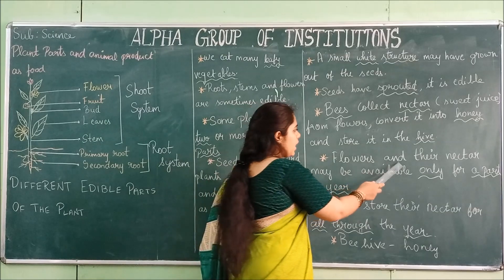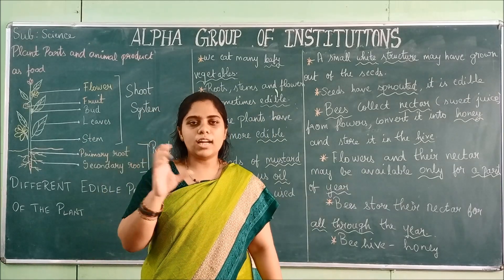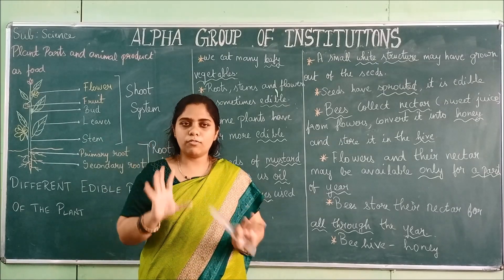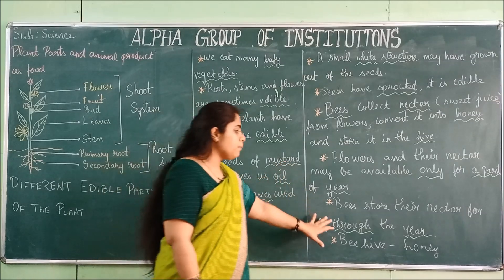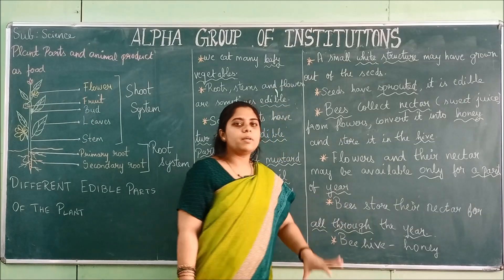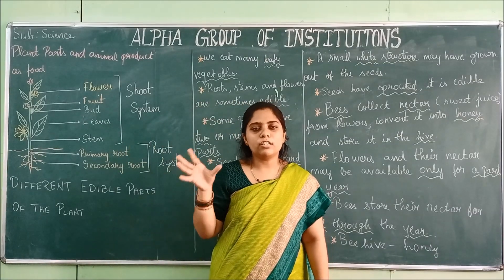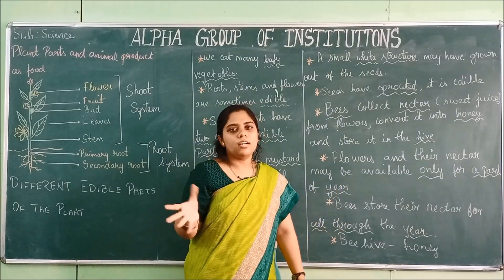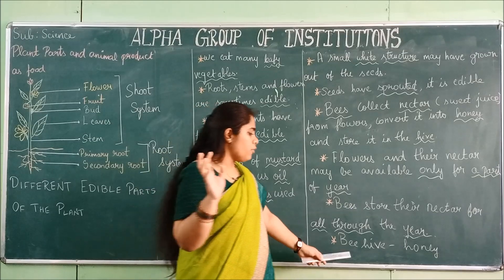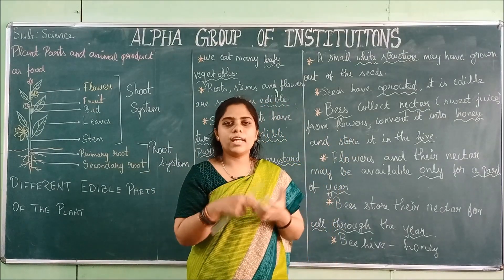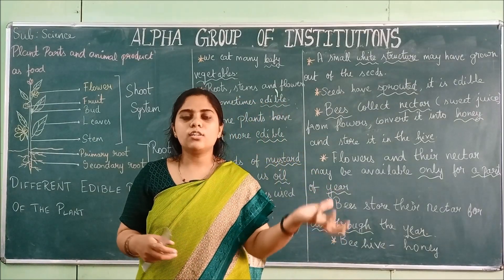Flowers and their nectar may be available only for part of the year — maybe a few months. But if bees store the nectar as honey in their hive, it will last for many years and won't spoil. If the nectar remains in the flower itself, it will disappear. But honey stored in the beehive stays throughout the year. From the beehive only we get honey — this is an animal product that is a source of food.